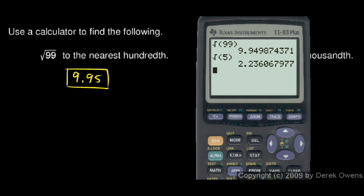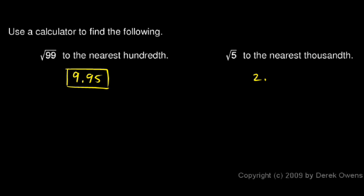And there's our answer, 2.236, and so on. We're told to give an answer to the nearest thousandth, so three decimal places. This would be 2.236.